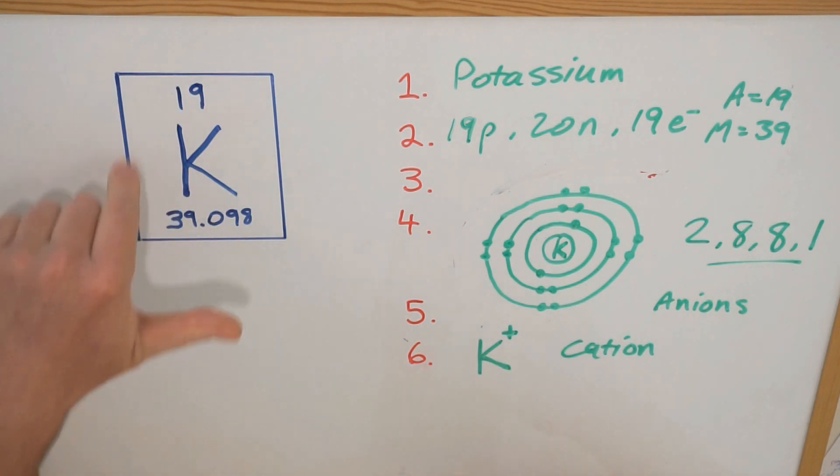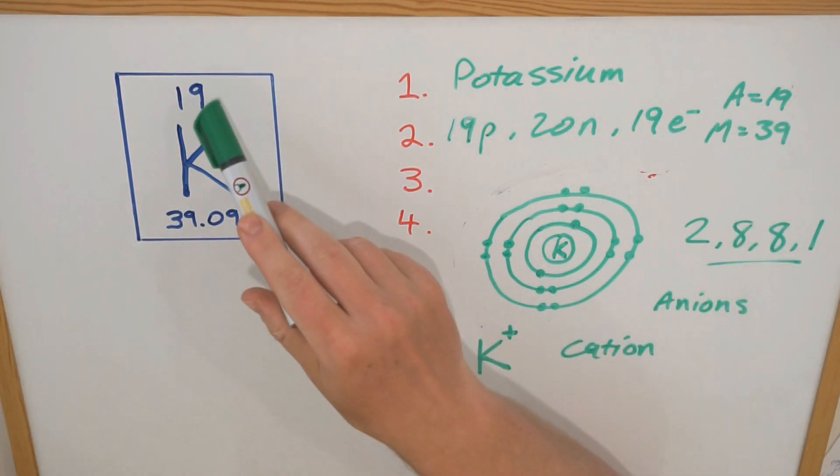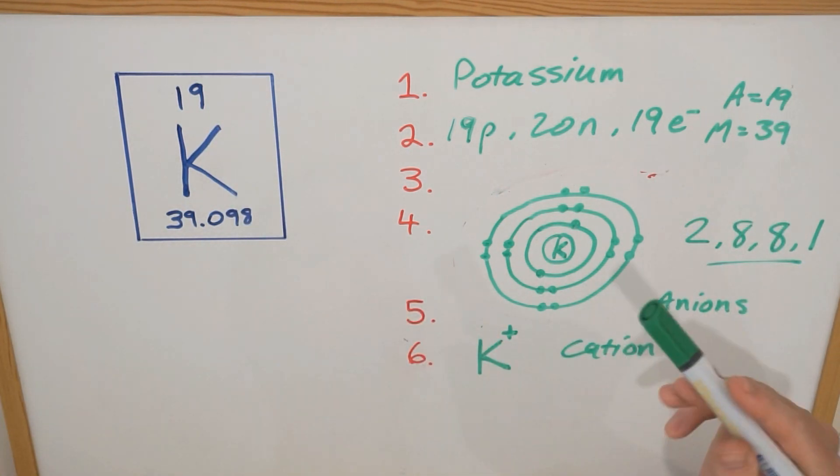So that's it for today. We've covered chemical symbols and we've talked about how the symbol represents the name of the element. We've covered atomic number and mass number. We've talked about what those numbers tell us in terms of the number of protons, neutrons, and electrons within the atom. Then we've used that information to draw an electron shell diagram, and we've also identified the electron configuration. And then lastly, we finished up by identifying what type of ion the element can become, based on whether it's gaining or losing electrons. Thanks for watching, and I'll see you next time.